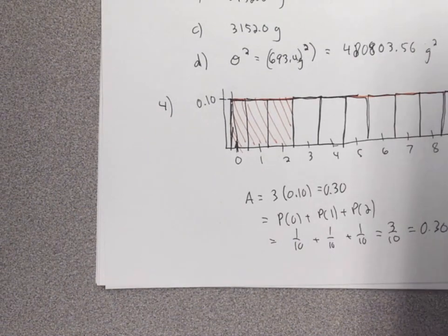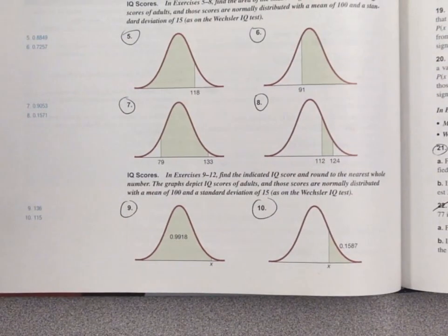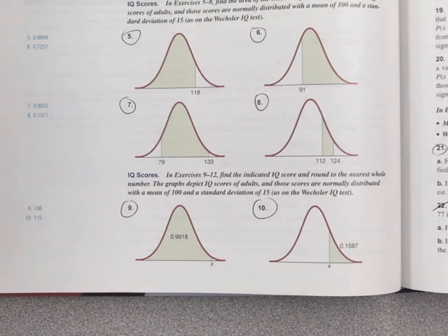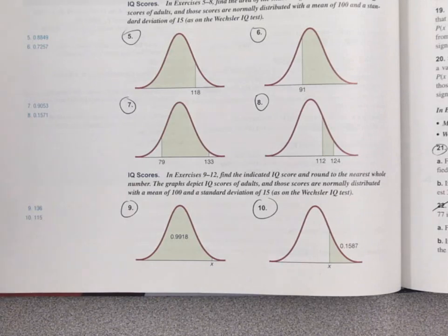Number 9 asks us to find the area of a shaded region. The graph depicts IQ scores of adults whose scores follow a normal distribution with a mean of 100 and a standard deviation of 15. IQ scores are set by convention — the mean will always be 100 and the standard deviation will always be 15, no matter how intelligence changes over time.